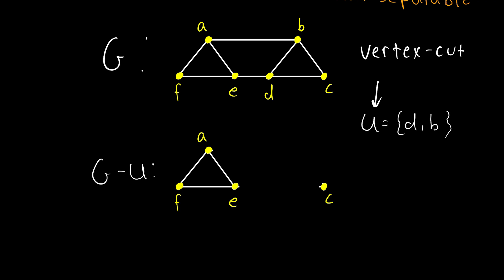So then how can we use these vertex cuts or what are also sometimes called separating sets? Since they're sets that separate the graph, how can we use these to characterize the connectivity of a graph? And I encourage you to pause and think on that for a minute before we introduce some definitions.